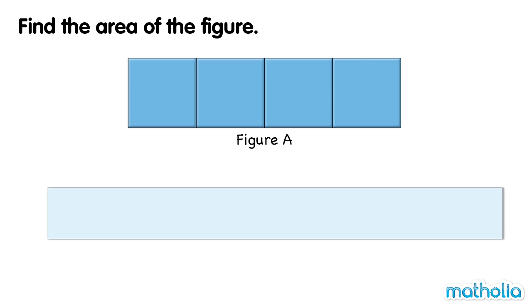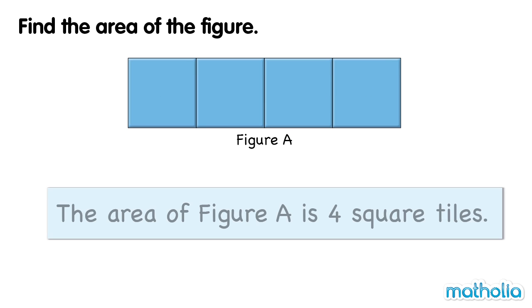Find the area of the figure. Figure A is made of one, two, three, four square tiles. The area of figure A is four square tiles.